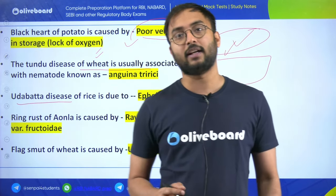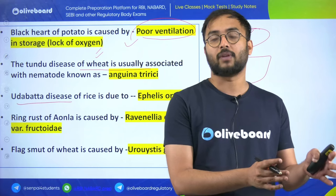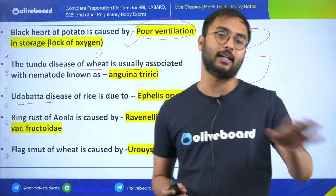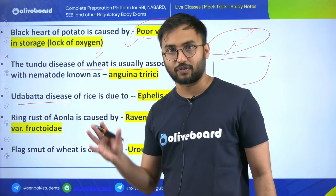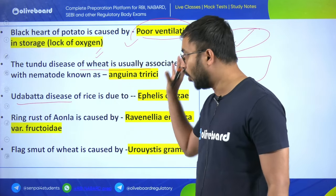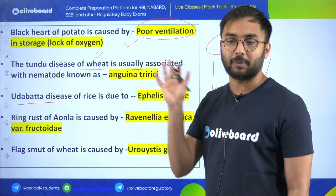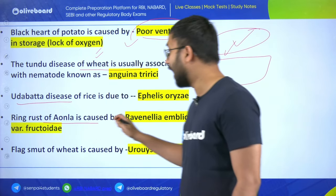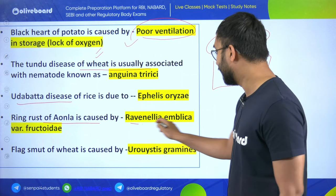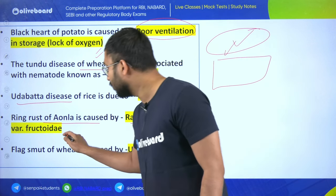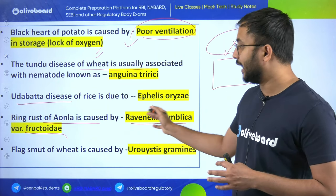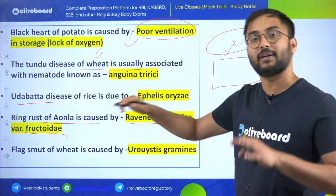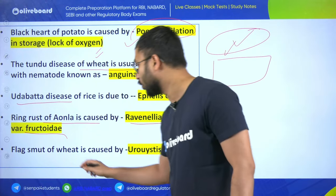These one-liners have been taken from different agriculture books and previous year question papers, so they are all important and will definitely come in upcoming exams. Ring rust of Aonla is caused by Ravenelia emblicae fructicolae - ring rust disease is very important, and they can also ask for different horticulture crops.